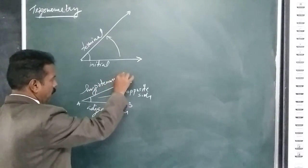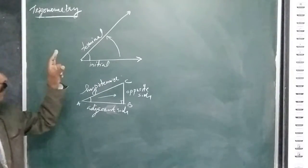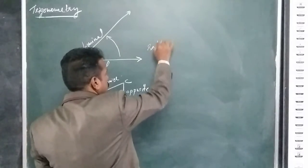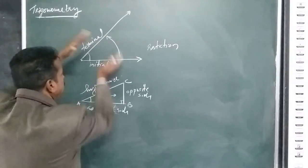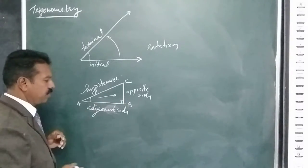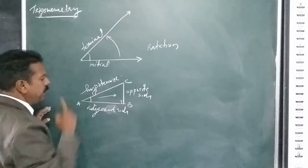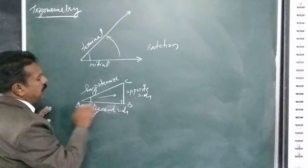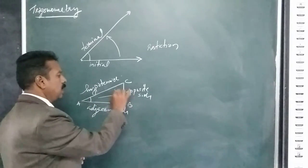Let me repeat again. An angle is formed by the rotation of a ray from its initial position to the final position in the anti-clockwise direction. After that, if you drop a perpendicular to the initial position, you will get a right-angled triangle. In this right-angled triangle, one angle is 90 degrees. The side opposite to the angle is the opposite side, the side nearer to the angle is the adjacent side, and the side opposite to the 90-degree angle is known as the hypotenuse.